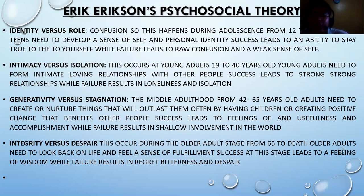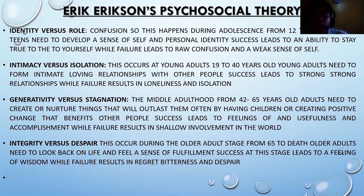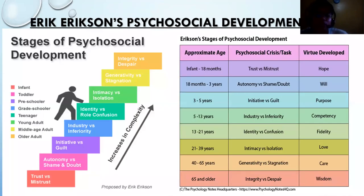Generativity versus stagnation occurs in middle adulthood from forty-two to sixty-five years old. Adults need to create or nurture things that will outlast them, often by having children or creating positive change that benefits others. Success leads to feelings of usefulness and accomplishment, while failure results in shallow involvement in the world or stagnation. Finally, integrity versus despair occurs during the older adult stage from sixty-five years old to death, where older adults look back on life and feel a sense of fulfillment. Success leads to wisdom, while failure results in regret, bitterness, and despair.